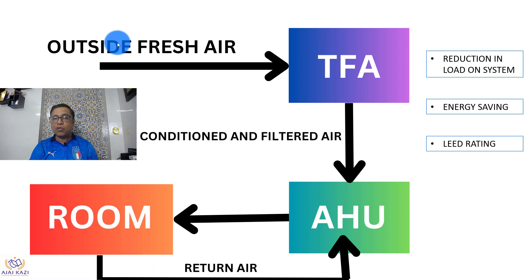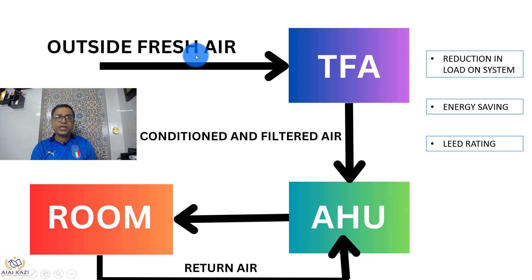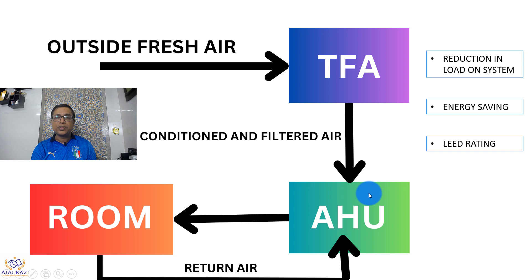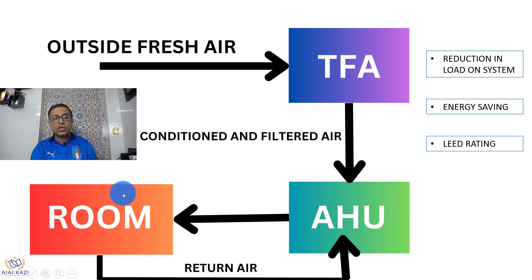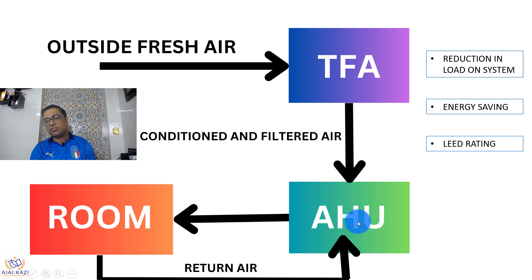Now let us look at how TFA works. We have one unit called TFA which is placed before the AHU. It takes the outside fresh air, conditions and filters it, and then supplies it to the AHU. In the earlier case, fresh air was coming directly. Now this pre-conditioned or filtered air comes into the AHU. In the TFA case, there is a unit which handles the fresh air before it enters the AHU.